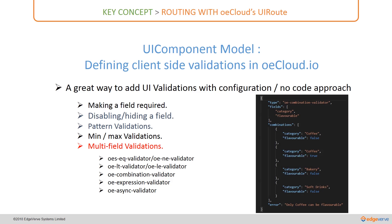The combination validator is an interesting validator. When you have two fields — for example 'category' and 'flavorable' — only certain combinations of values are permissible. Using this combination validator, you specify a range of valid combinations in an array. For example, when category is 'coffee' the flavorable must be false; if category is 'coffee' the flavorable has to be true; for 'bakery' flavorable must be false; and for 'soft drinks' flavorable must be false. If these combinations are not submitted in the JSON payload, you get a validation error.